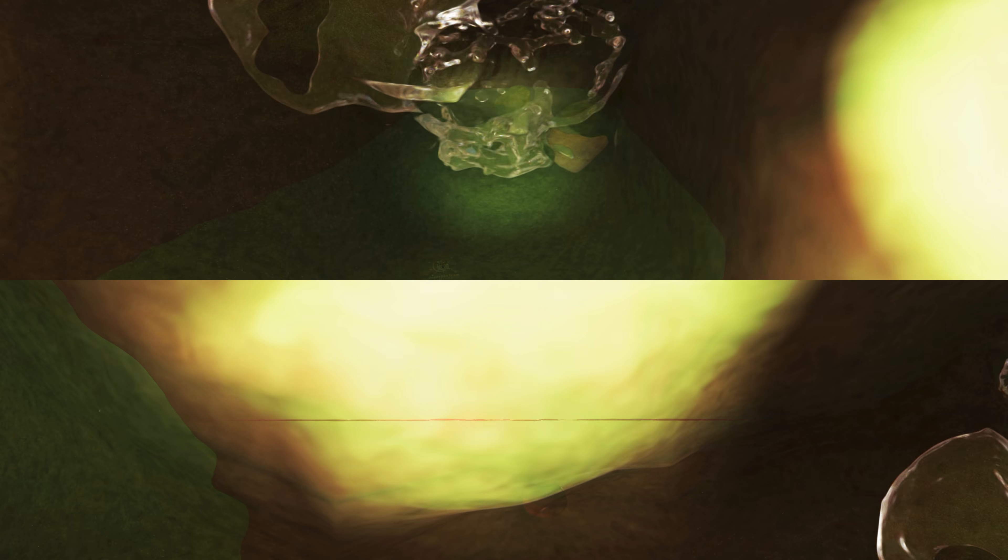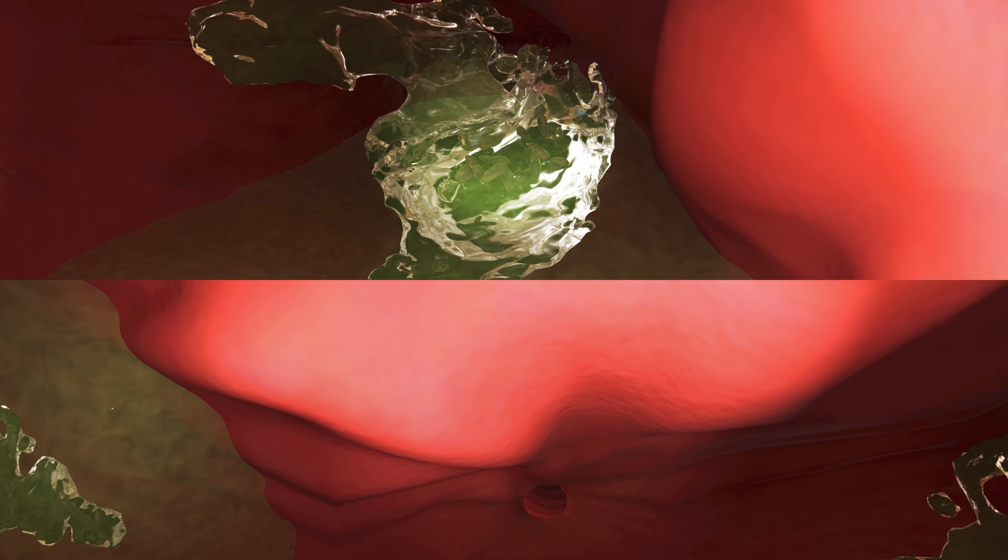The inner layer of the stomach is full of wrinkles, known as rugae. Rugae both allow the stomach to stretch in order to accommodate large meals and help to grip and move food during digestion.